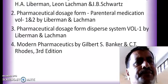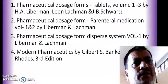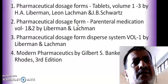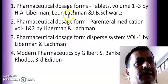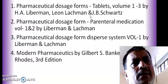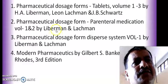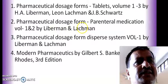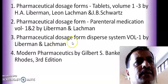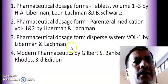The recommended books as per the Pharmacy Council of India for Industrial Pharmacy 1 are: first, Pharmaceutical Dosage Forms: Tablets, Volumes 1 to 3, written by H.A. Lieberman, Lachman, and J.B. Schwartz. Second, Pharmaceutical Dosage Forms: Parenteral Medications, Volumes 1 and 2, again from the Dekker series written by Lieberman and Lachman. Third, Pharmaceutical Dosage Forms: Disperse Systems, Volume 1, by Lieberman and Lachman. All these first three books are from the Dekker series.